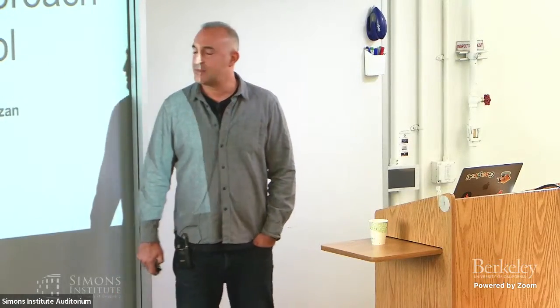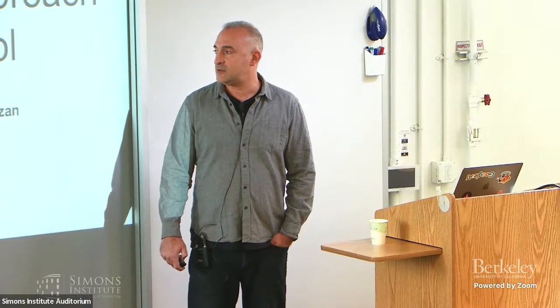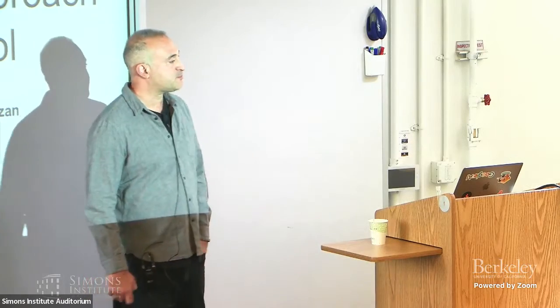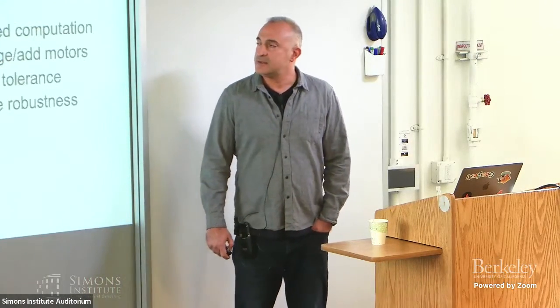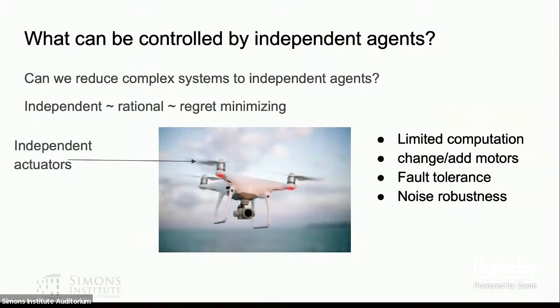This is work with my student, who is here and is the main author of this work, and Udari, and Nobel Leonard, a professor and famous control theorist from Princeton. This work is about regret minimization for multi-agent control — the same topic we've been discussing.